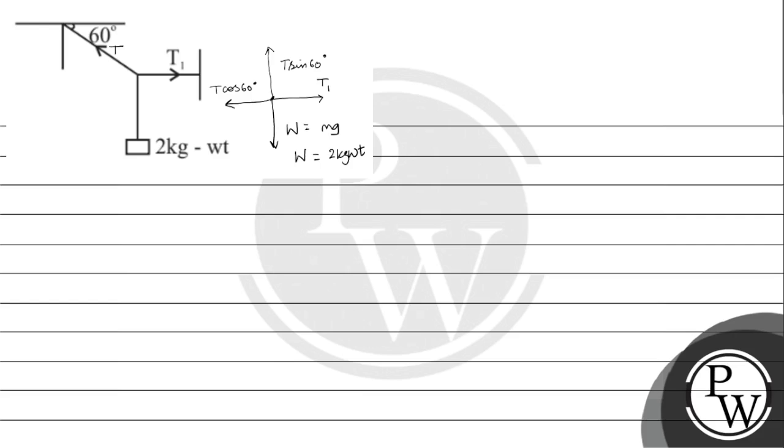The vertical component is T sin 60 equals W. Therefore, T is equal to W by sin 60.